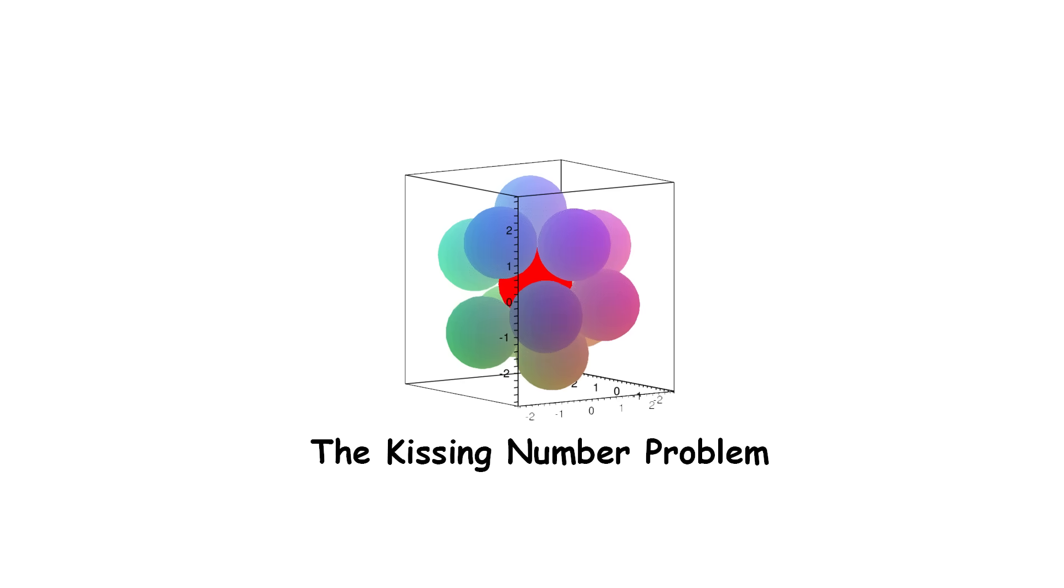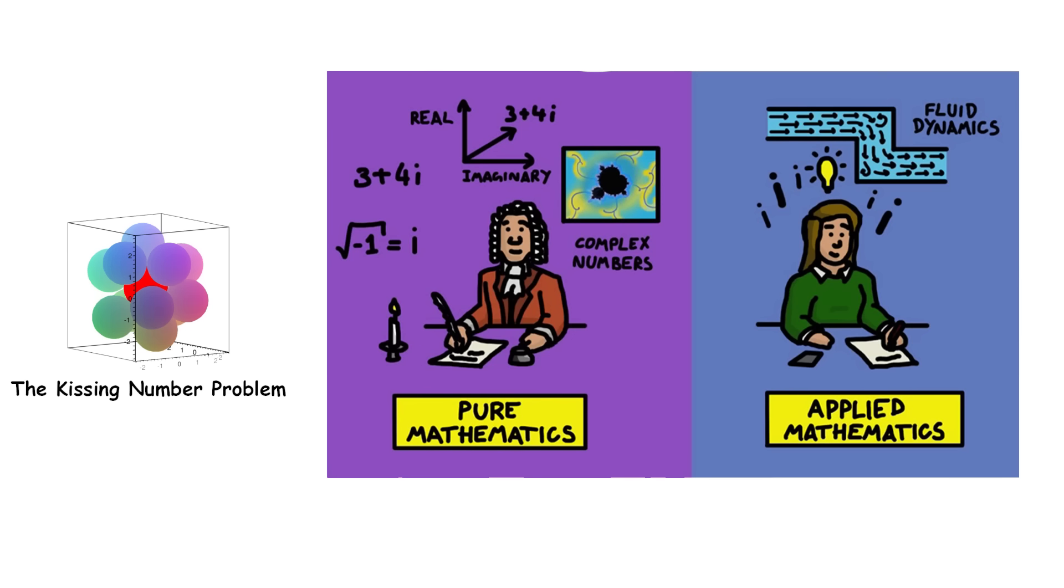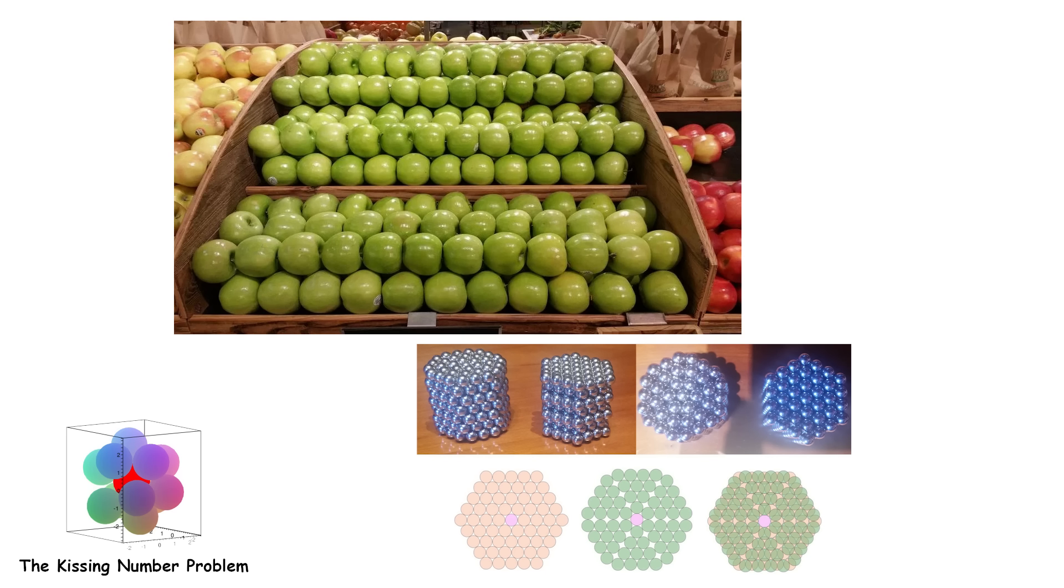The Kissing Number Problem. A broad category of problems in math are called the sphere-packing problems. They range from pure math to practical stuff, like figuring out how to stack many spheres in a given space, like fruit at the grocery store.